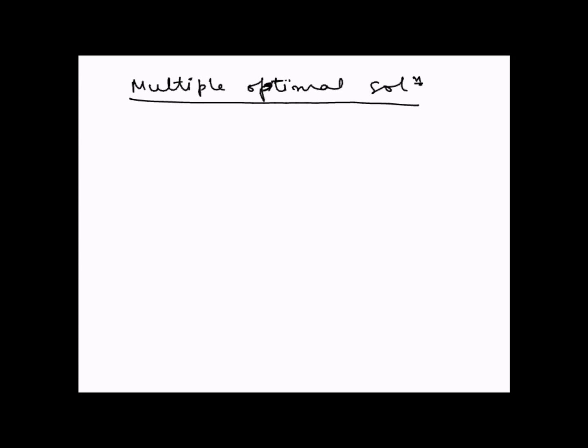Some linear programming examples have multiple optimal solutions. Let us understand how this happens.